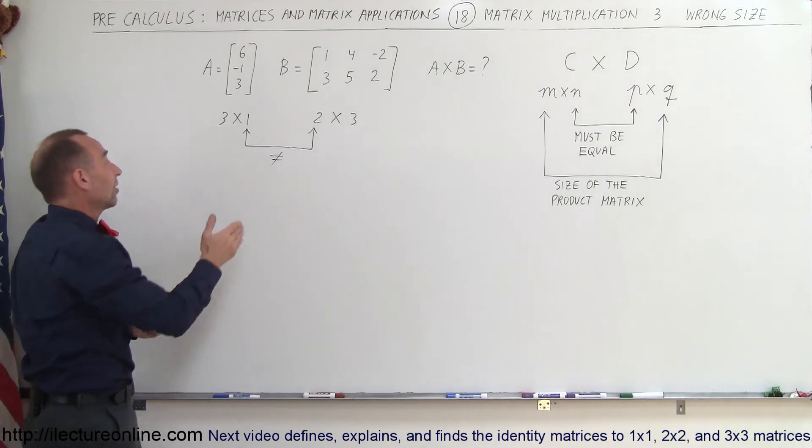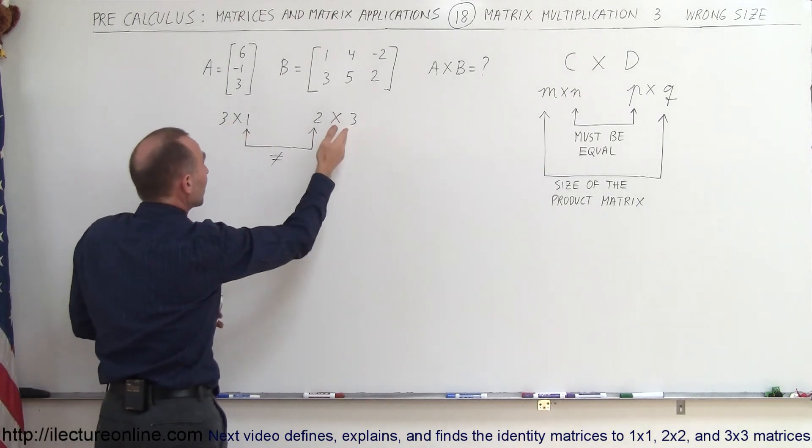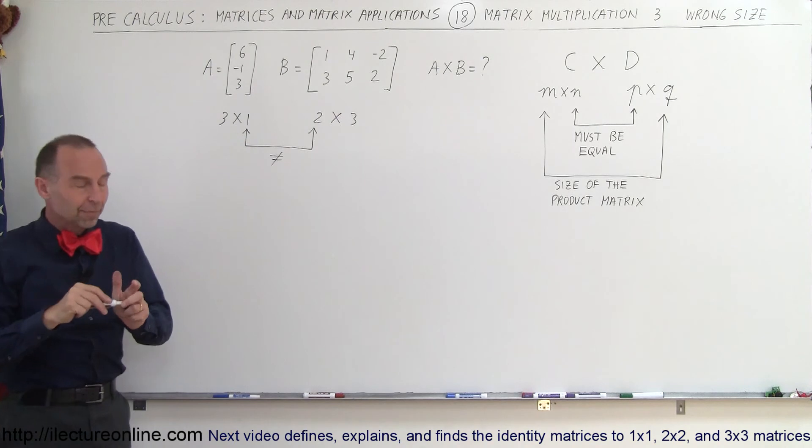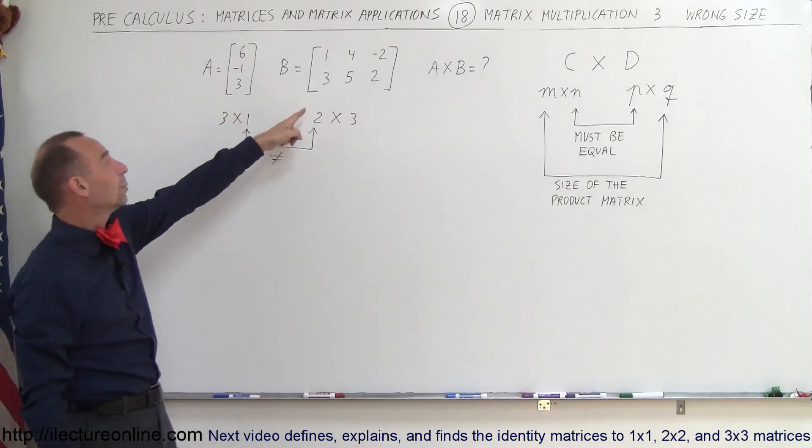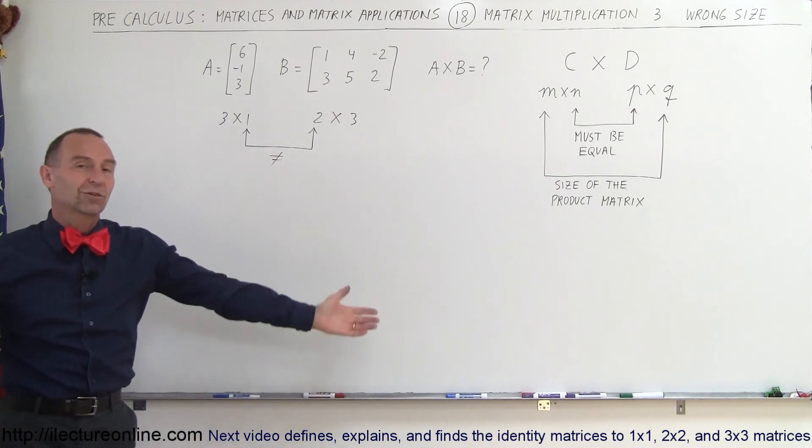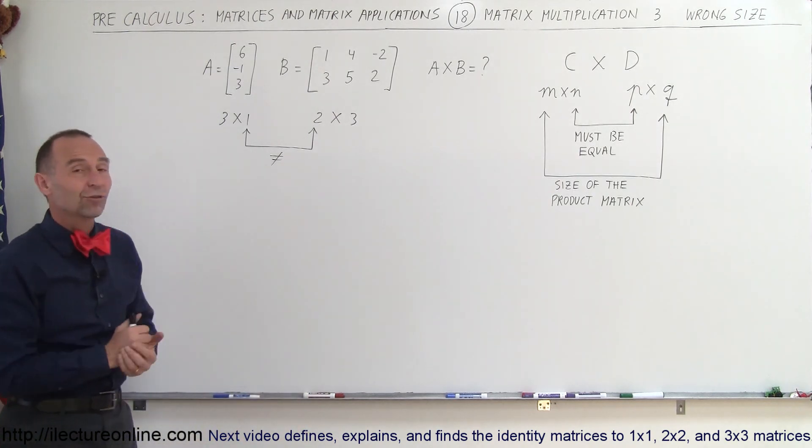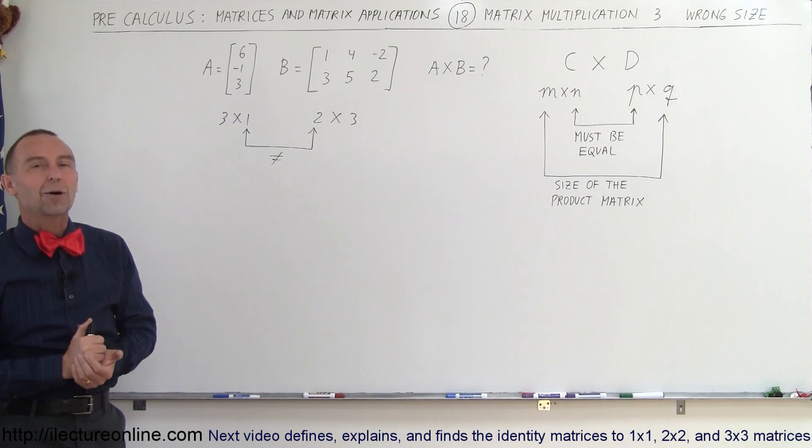If you could, of course, the resulting size would be three by three, but it's not even possible, we cannot even begin, because the number of columns of the first matrix does not equal the number of rows of the second matrix. So in that case, you cannot do the multiplication, that's as far as you can go. And that's how we know.